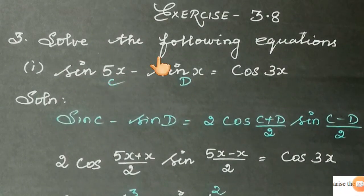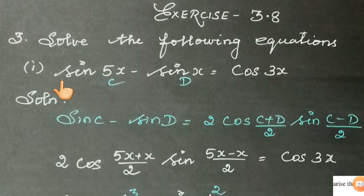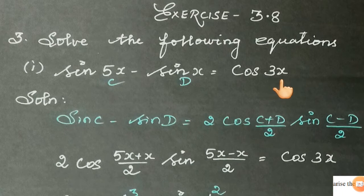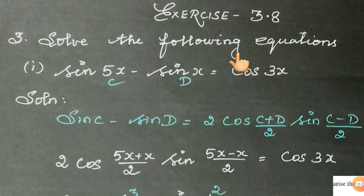Exercise 3.8, Third sum. Solve the following equations. First subdivision: sin 5x minus sin x is equal to cos 3x. Second sum — solve the following equations, where x lies between 0 degrees to 360 degrees.